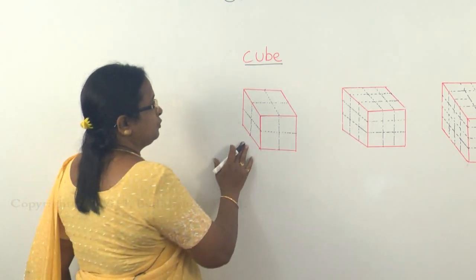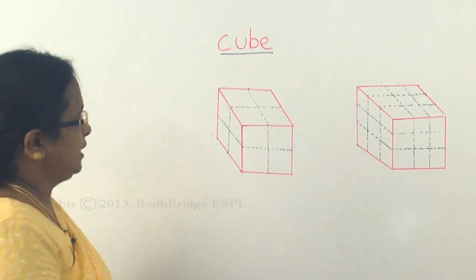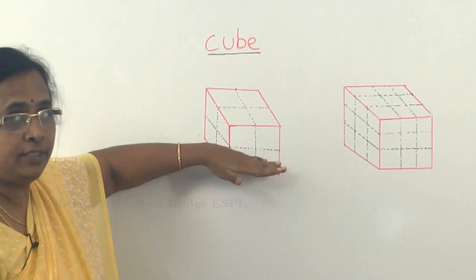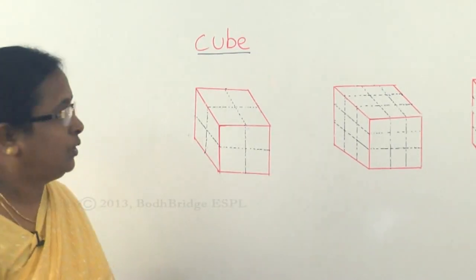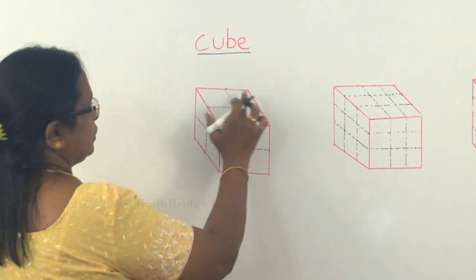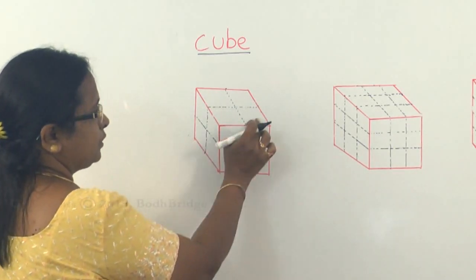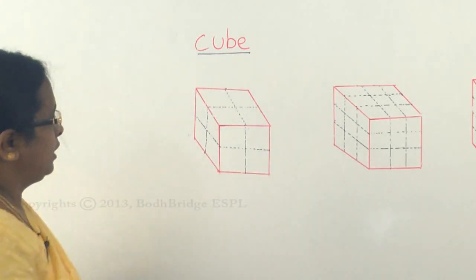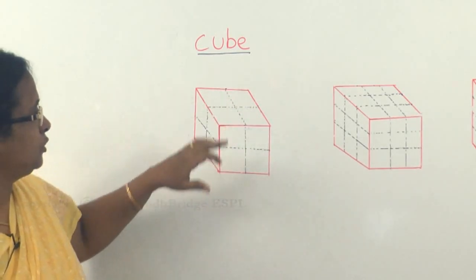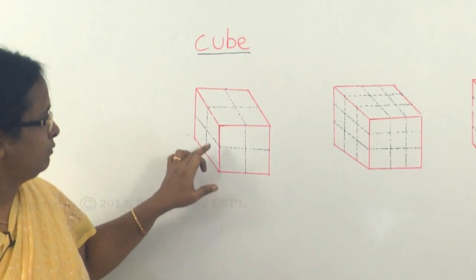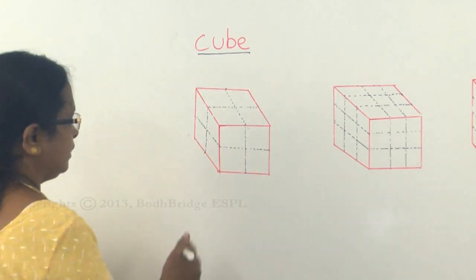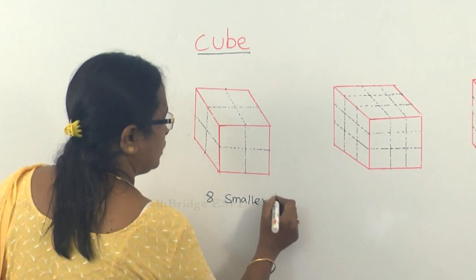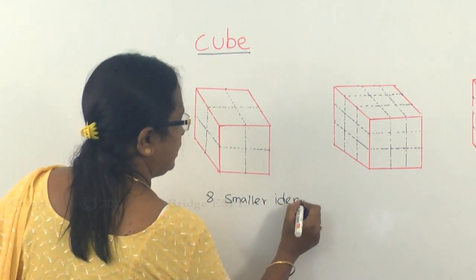Consider the first case where you make one cutting on one side, a second cutting, and a third cutting. So with three cuttings, you will have totally eight smaller cubes. In one layer, the top layer alone you have four smaller cubes, and the bottom again you have four. So you will have totally eight smaller identical cubes when you have three cuttings.